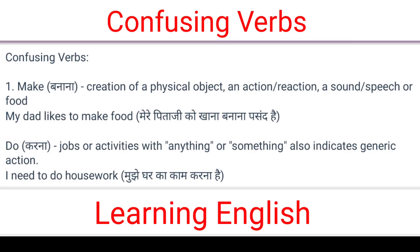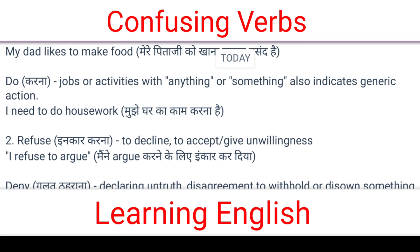Confusing verbs. 'Make' is used for the creation of a physical object, an action, reaction, a sound, speech, or food. For example: 'My dad likes to make food' — Meri pita ji ko khana banana pasand hai. 'Do' is used for jobs or activities with anything or something, and also indicates a generic action. For example: 'I need to do homework' — Mujhe ghar ka kaam karna hai.